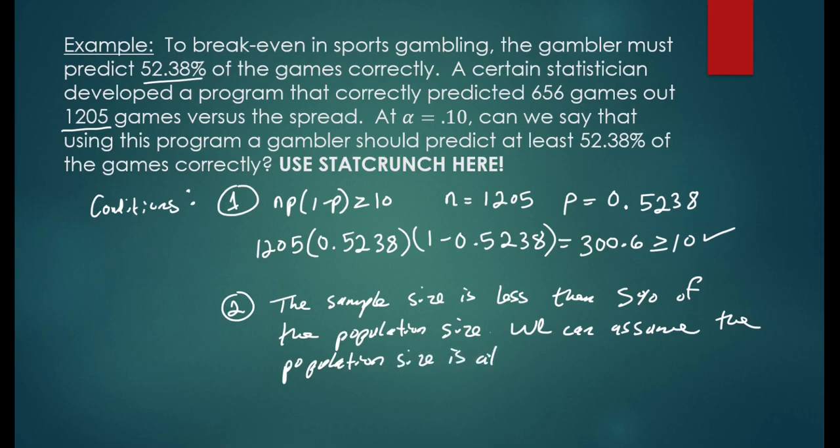We can assume the population size is at least the sample size, 1205, multiplied by 20. This yields a value of 24,100. So we can assume the population size is at least 24,100.